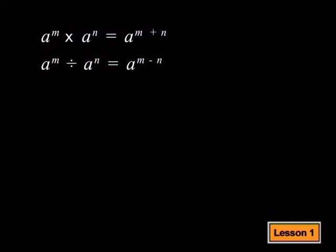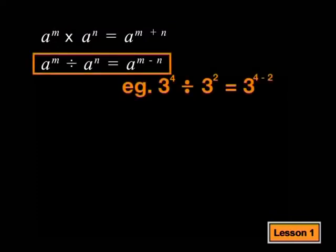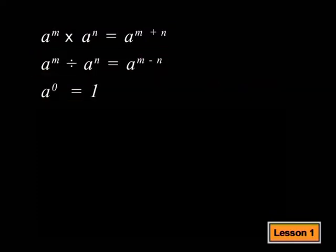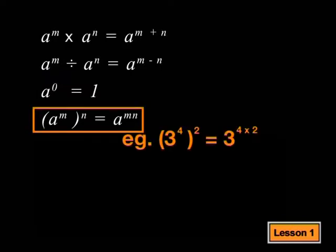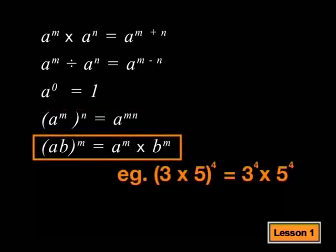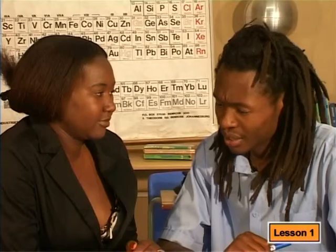If you divide like bases, you subtract the exponents. Anything raised to the power of zero is equal to one. And if you raise a power to a power, you multiply the powers. If two bases are all raised to a common power, then both bases take the power. I'm afraid that's all I remember.